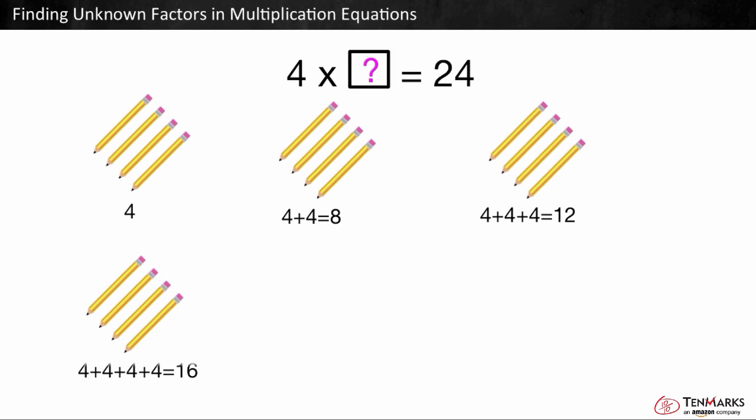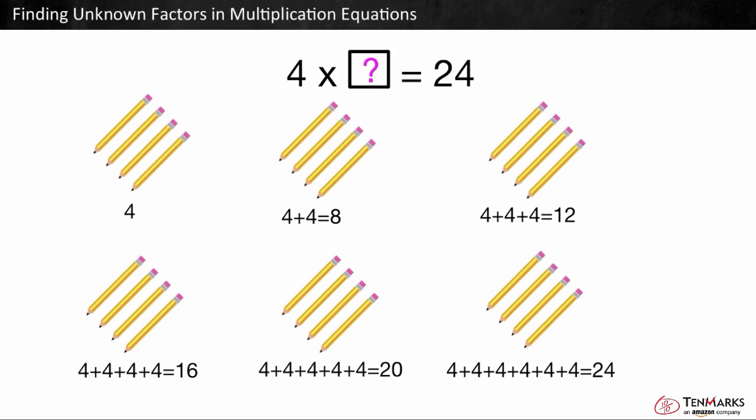Then four groups, 4 plus 4 plus 4 plus 4 is equal to 16. Then we have our fifth group, which would be 4 added 5 times, equals 20. And our sixth group, which is 4 added 6 times, and that equals 24.